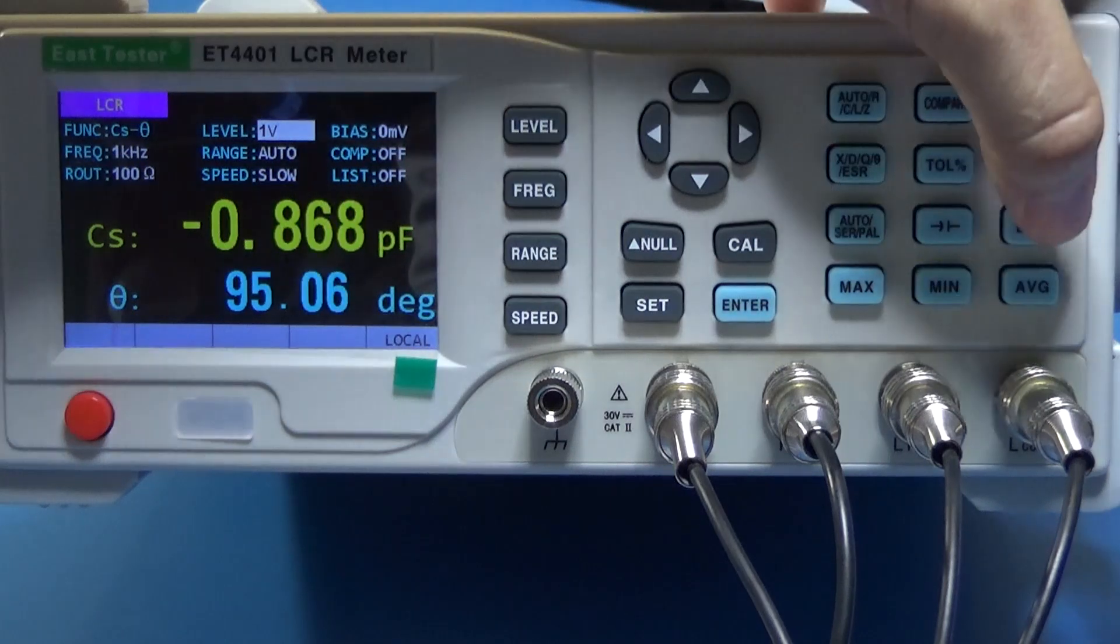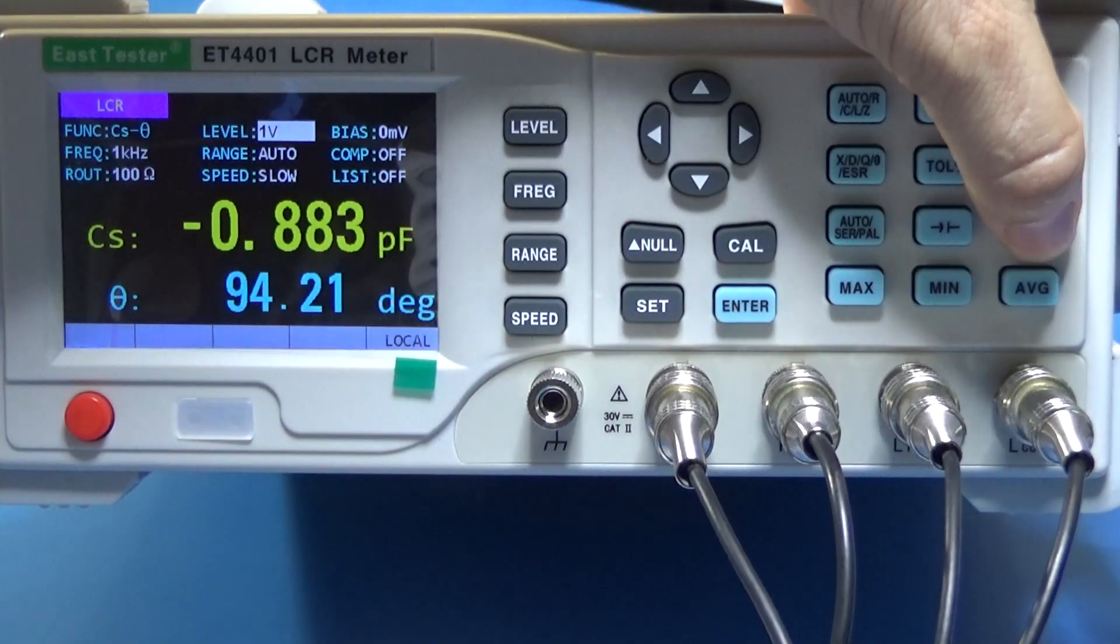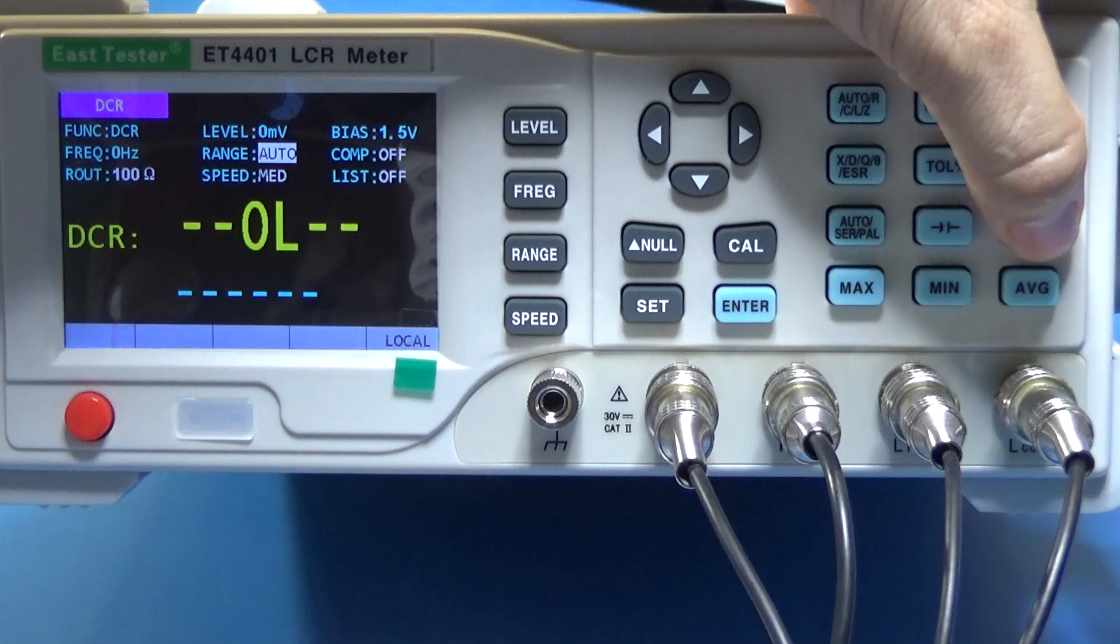And the last one, as we said, this one was electrolytic capacitor. The last one is just for resistors to test a resistor with the Kelvin wires. It's this button.